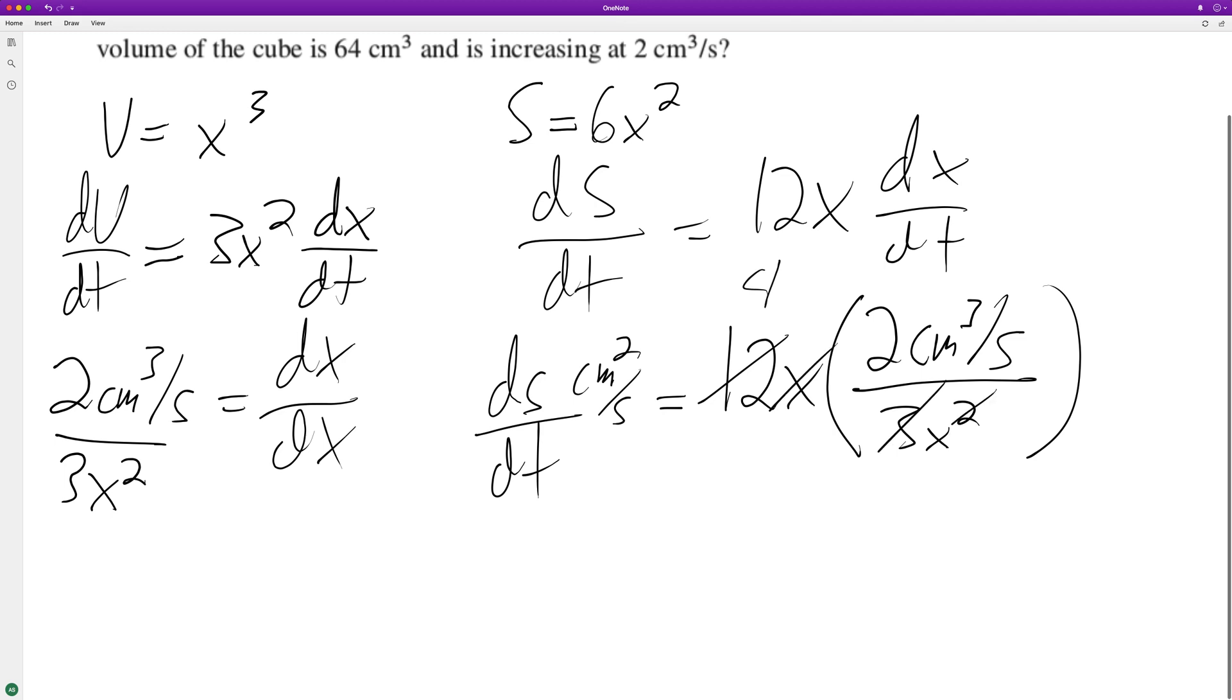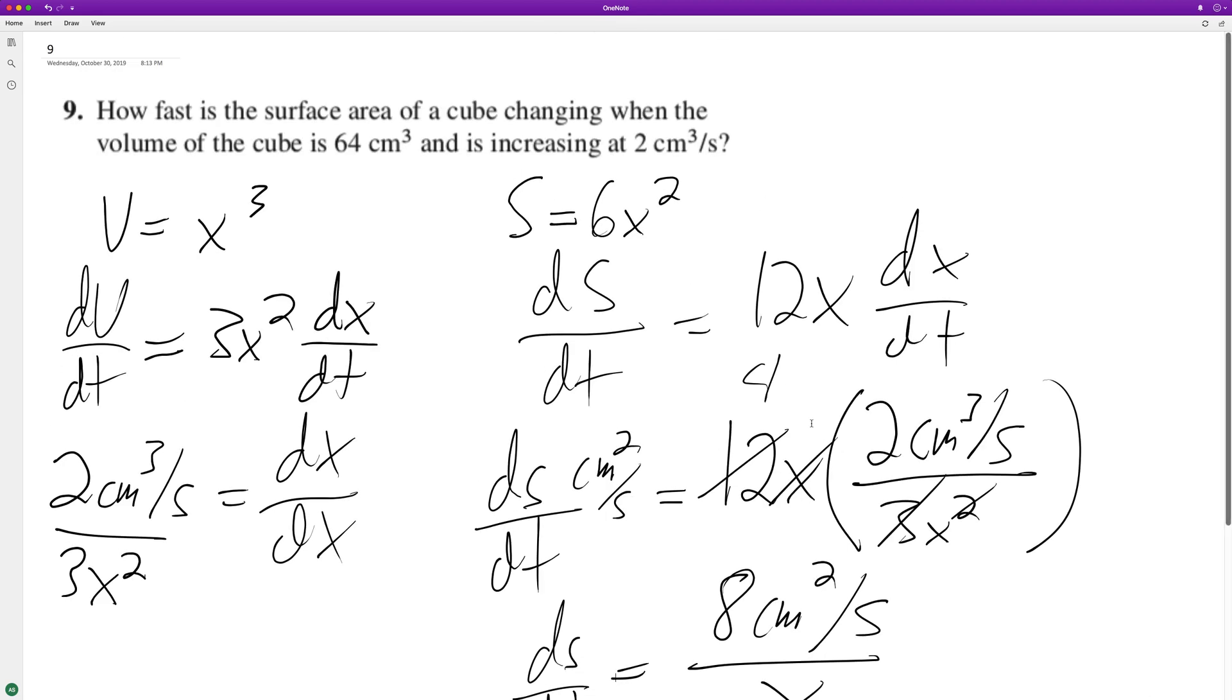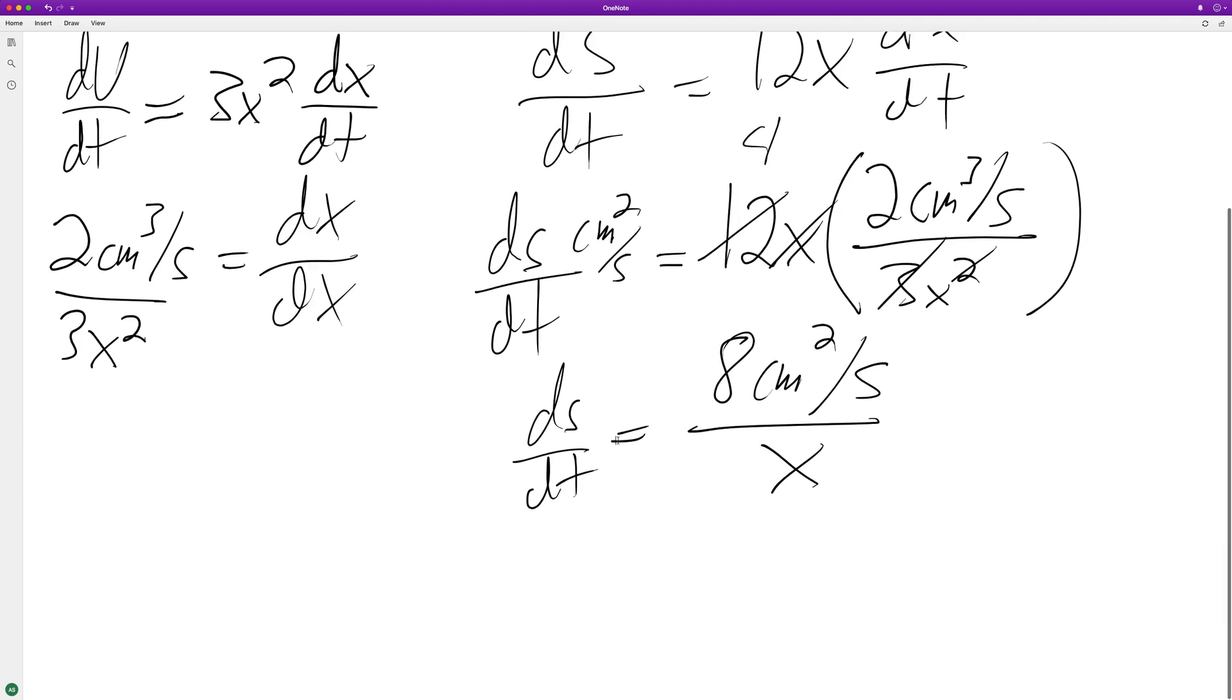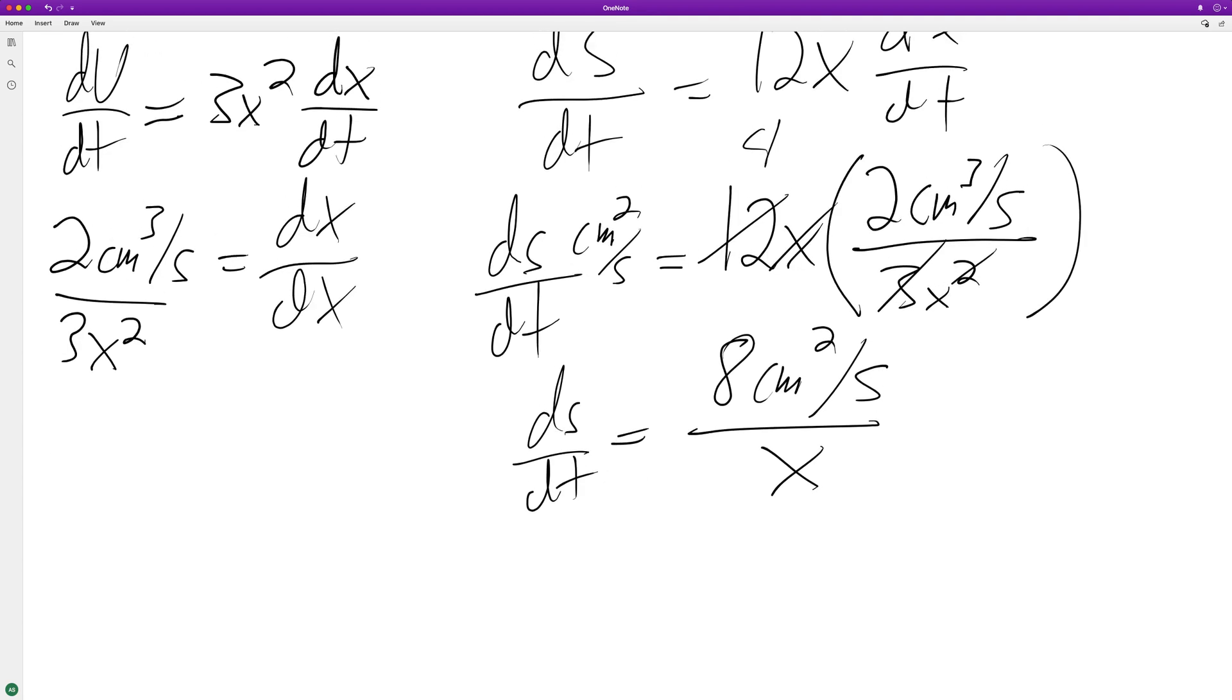And this just becomes an x. So we end up with 8 centimeters squared per second over x, depending on what we choose x to be. And based off of this, so the volume of 64, the cube root of 64 is 4. So it's going to be 4 centimeters squared per second.